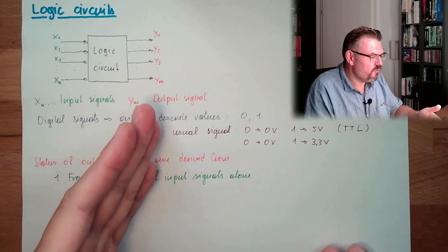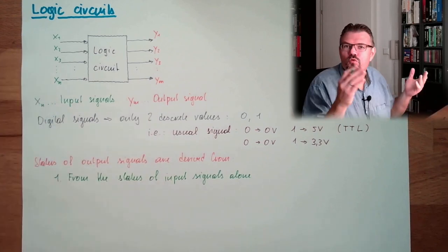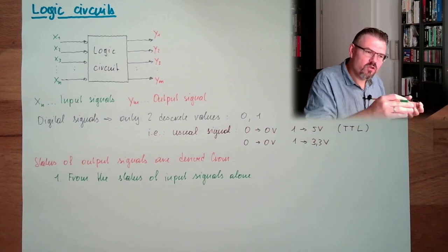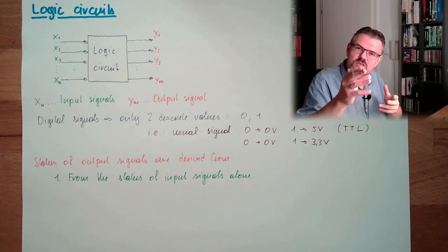So the output signals are derived from the input signals due to whatever rule. So if this and this is there, and that's not, then we set the input, and so on.